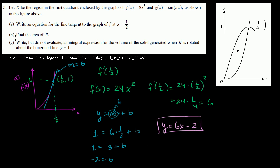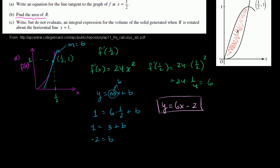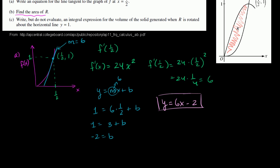Now Part B: find the area of R. R is this region right over here, bounded above by g of x, which is sine of pi x, and bounded below by f of x, which is 8x to the third.